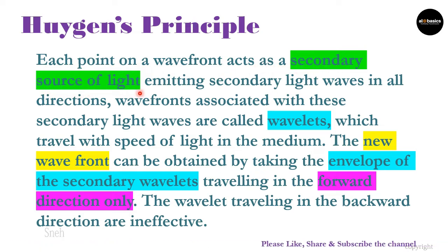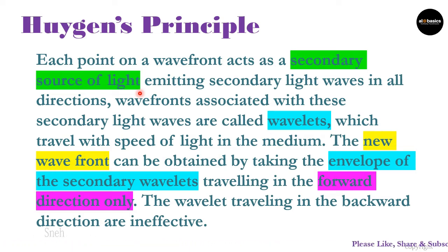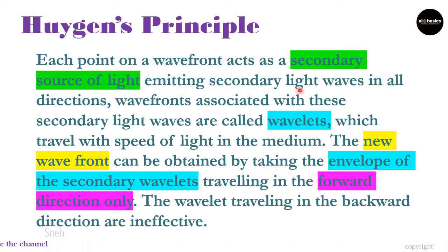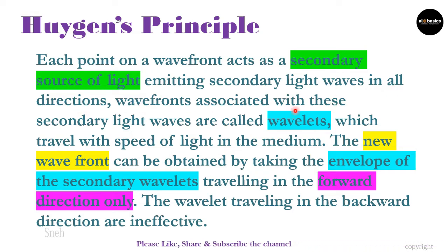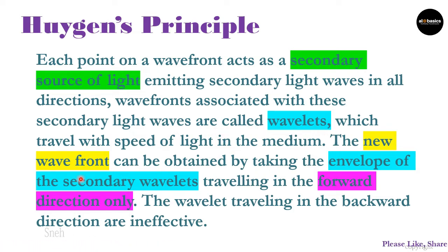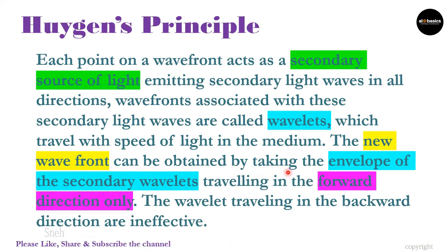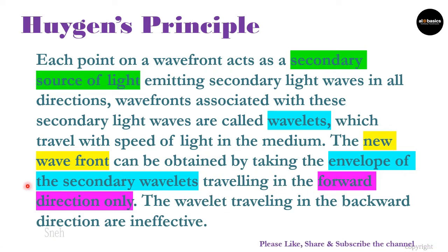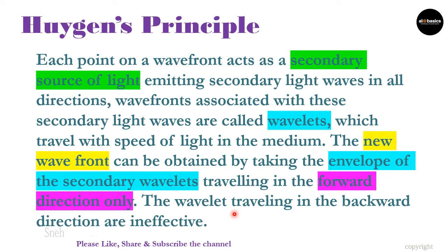What is a secondary source of light? Let me first state this principle and then we will discuss it. Each point on the wavefront acts as a secondary source of light, emitting secondary light waves in all directions. Wavefronts associated with these secondary light waves are called wavelets, which travel with the speed of light in the medium. The new wavefront can be obtained by taking the envelope of the secondary wavelets traveling in the forward direction only. The wavelets traveling in the backward direction are ineffective.